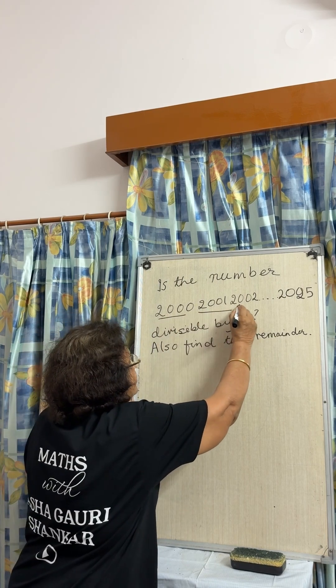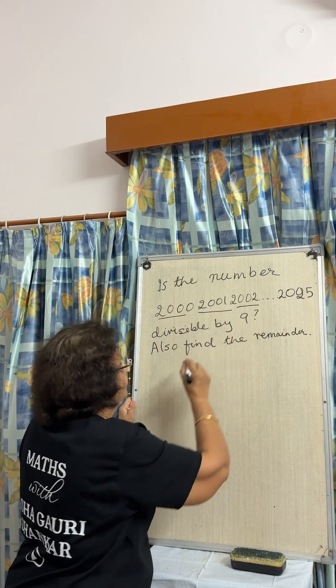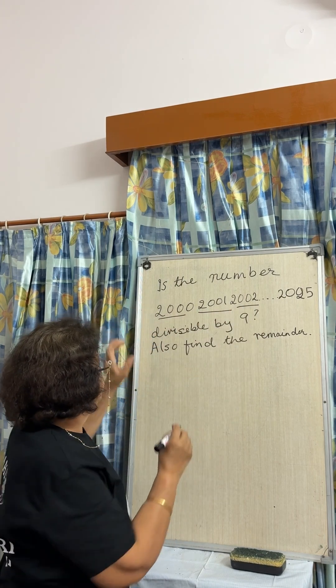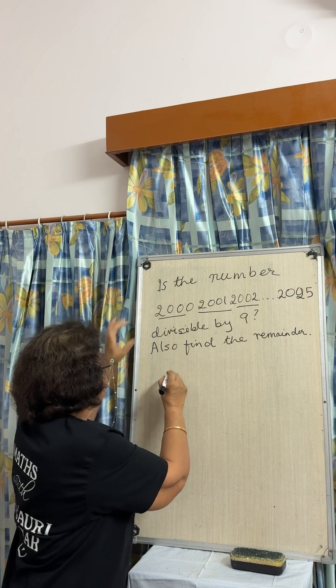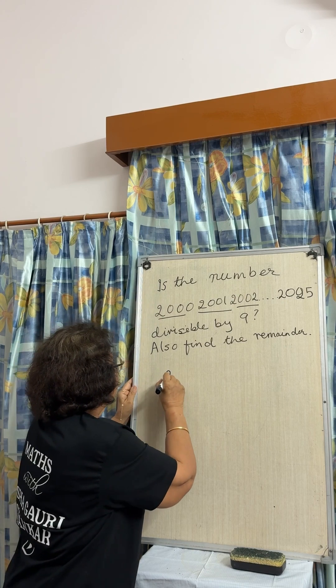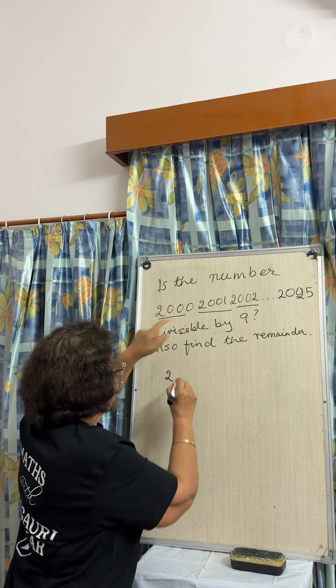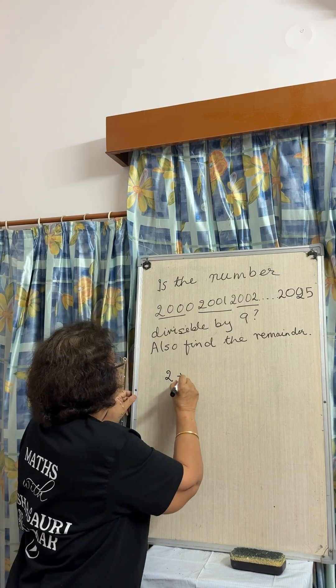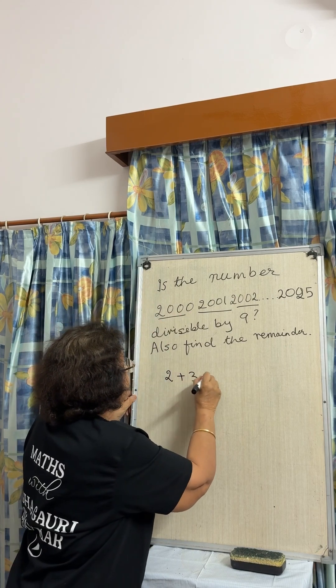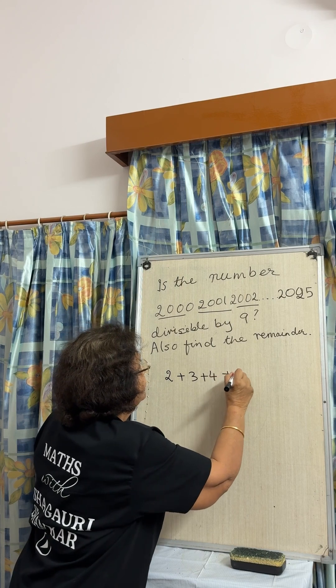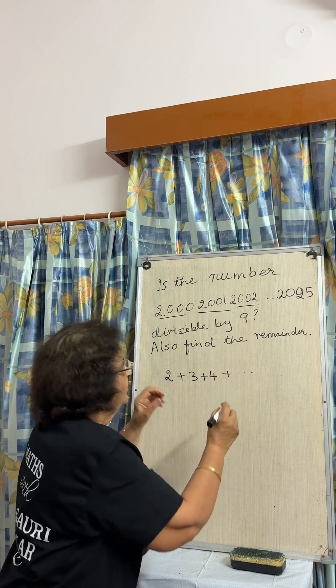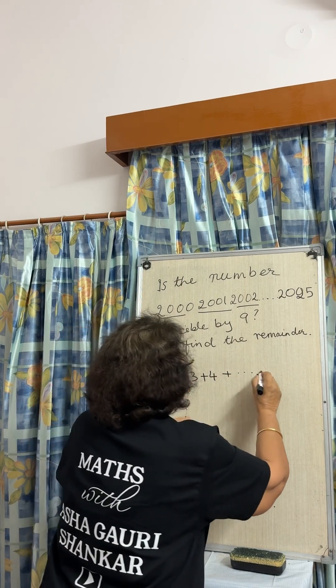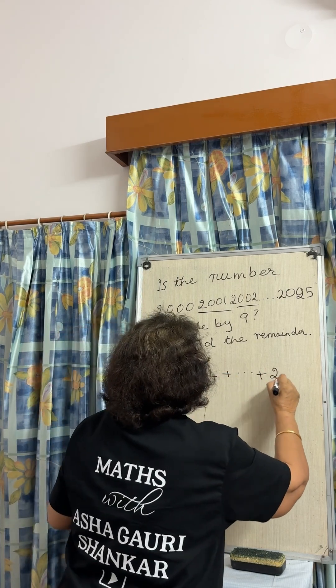We break it up into groups of 4. The sum of the digits in the first group is 2, then 3, then 4, and up to here you have 27.